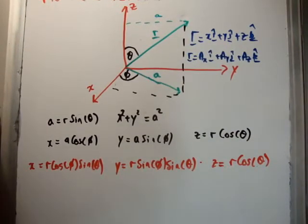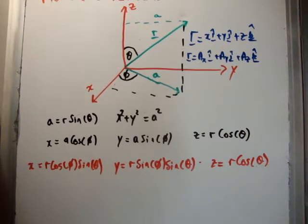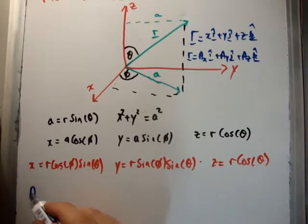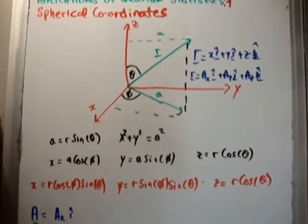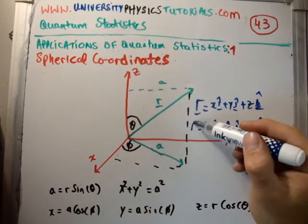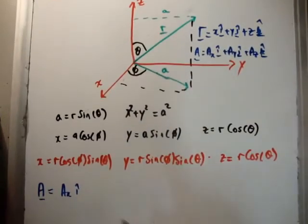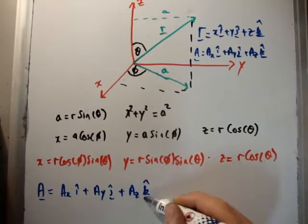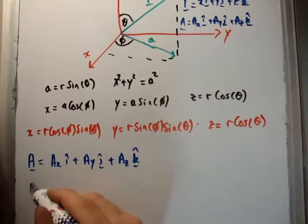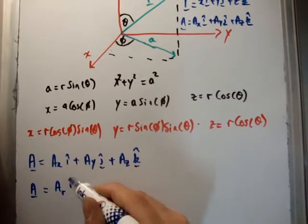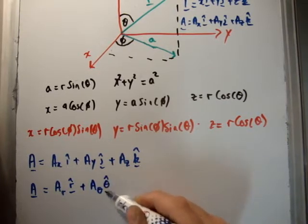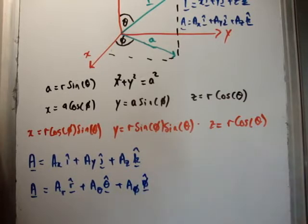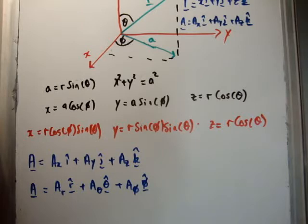In general, our vector A is A_x in the i-hat direction, A_y in the j-hat direction, and A_z in the k-hat direction. In spherical coordinates, we can rewrite this so that vector A equals A_r in the r-hat direction, plus A_theta in the theta-hat direction, plus A_phi in the phi-hat direction. We now have what x, y, and z are in terms of theta, phi, and r. We now need to get the unit vectors: phi-hat, theta-hat, and r-hat.